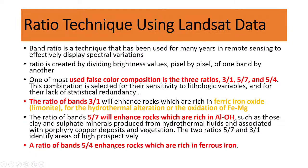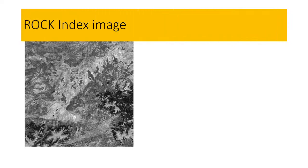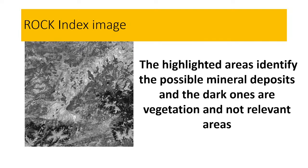The ratio of bands B5/B4 enhances rocks raised in ferrous iron — we can easily identify ferrous iron using this ratio. Using all of these ratios, we can easily identify different types of rock and minerals. In the rock index image, the highlighted area identifies possible mineral deposition, and the dark areas are vegetation or non-relevant areas.